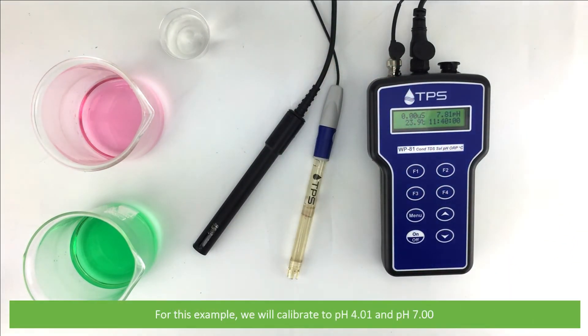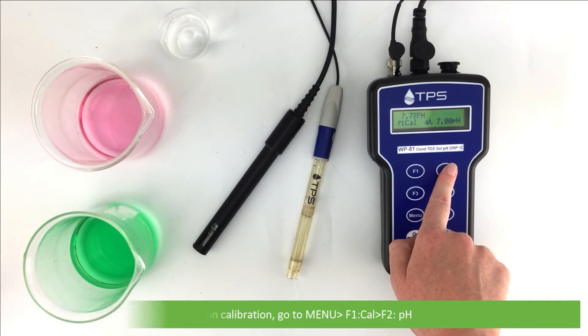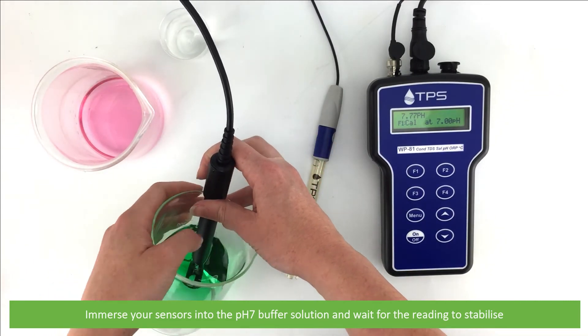For this example we will calibrate to pH 4.01 and pH 7. To begin calibration, go to menu, F1 cal, F2 pH. Immerse your sensors into the pH 7 buffer solution and wait for the reading to stabilize.